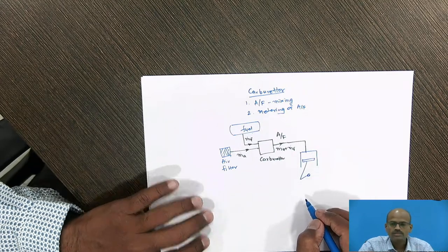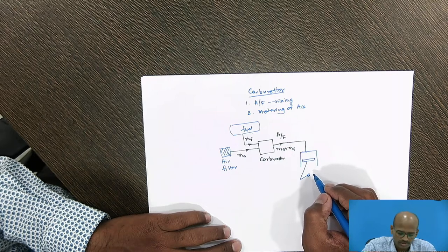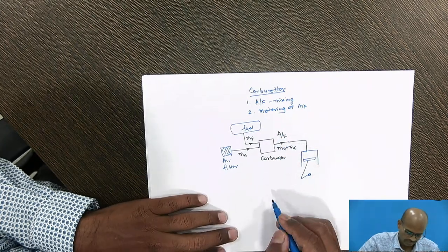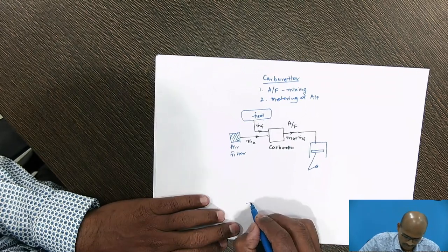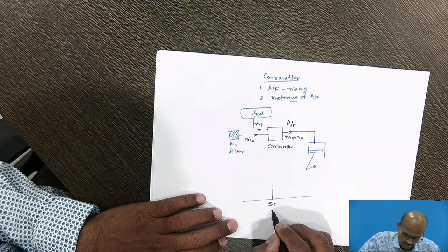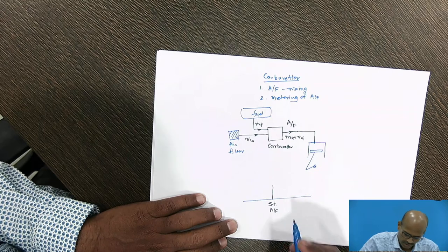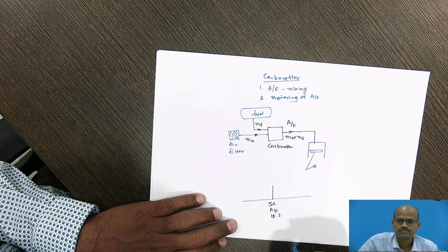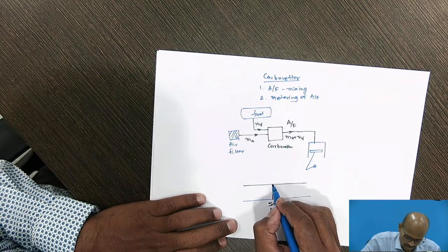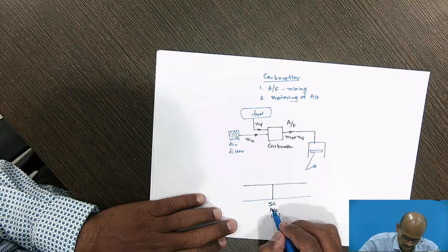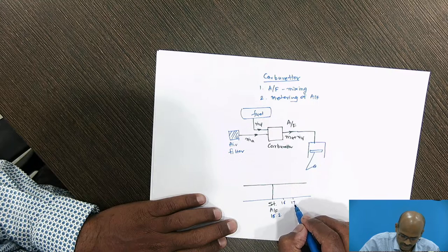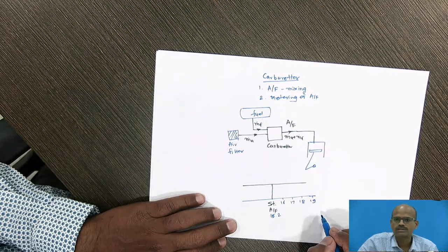Depending upon the rider's or driver's demand, the engine will take a certain air-fuel ratio. For reference, we will consider the stoichiometric air-fuel ratio, which is 15.2. In this mixture, if we keep increasing the mass of air, the value will go to 16, 17, 18, 19, and so on.